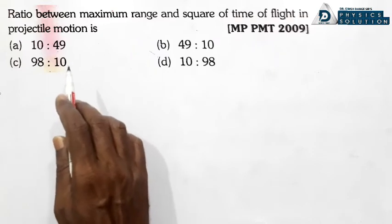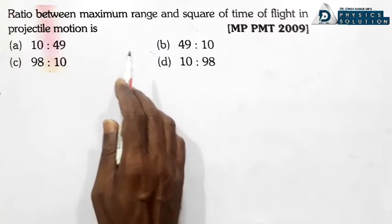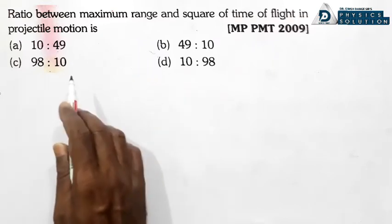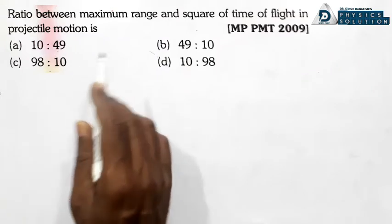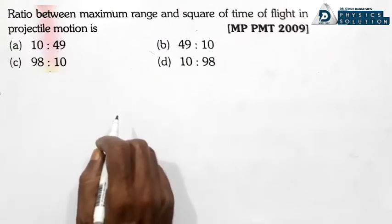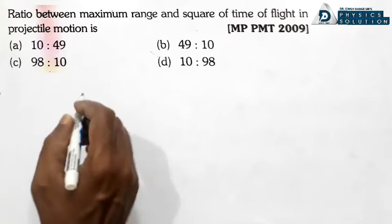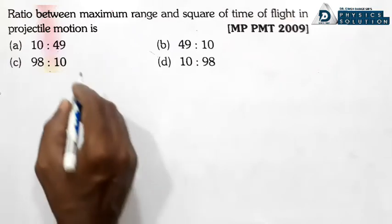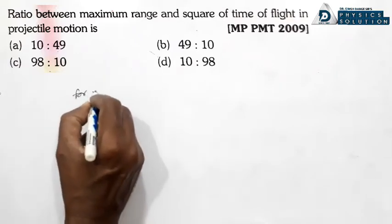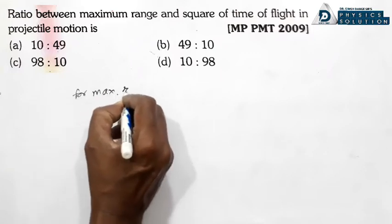Ratio between maximum range and square of time of flight in projectile motion is to be found. For maximum range, the angle of projection theta is equal to 45 degrees.